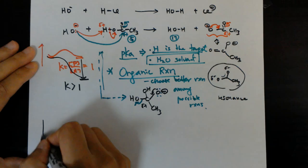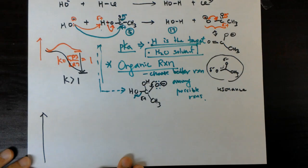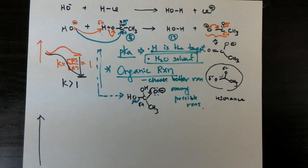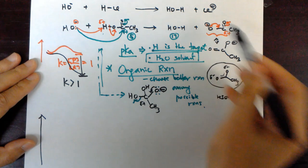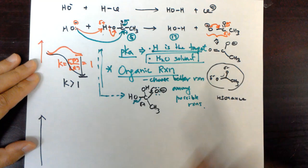Let's look at the potential energy diagram. From now on we're going to use potential energy diagrams more frequently and more in depth, gradually. When you compare these two reactions — Cl minus versus the conjugate base of acetate — Cl minus has much greater stability due to its huge size.